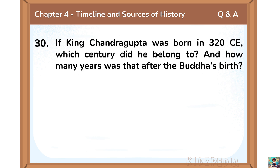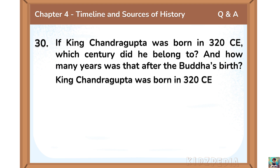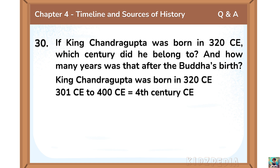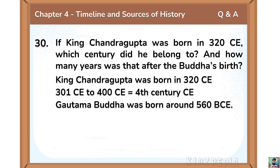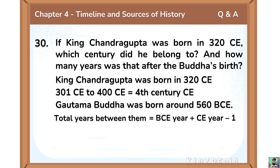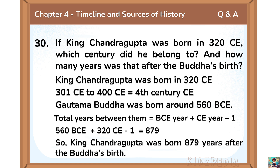If King Chandragupta was born in 320 CE, which century did he belong to, and how many years was that after the Buddha's birth? King Chandragupta was born in 320 CE, so he belonged to the 4th century CE. Gautama Buddha was born around 560 BCE. To calculate the total years between them, we add BCE year plus CE year minus 1: 560 + 320 − 1 = 879. So King Chandragupta was born 879 years after the Buddha's birth.